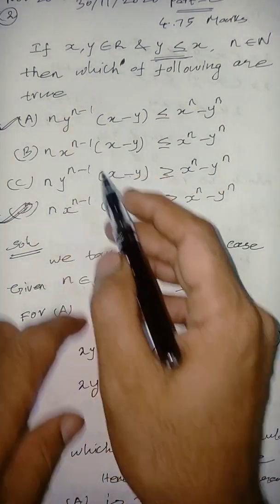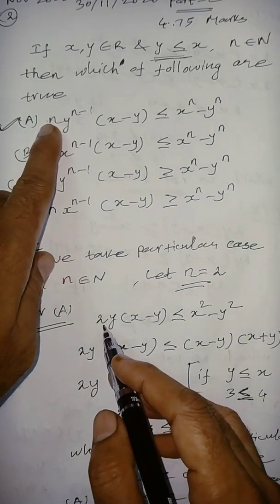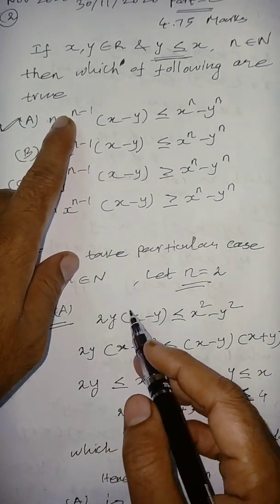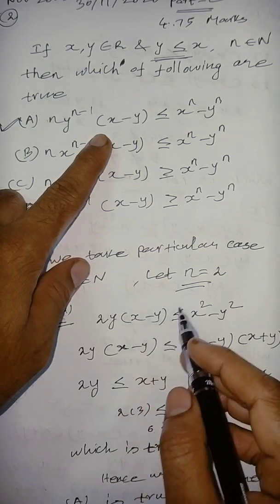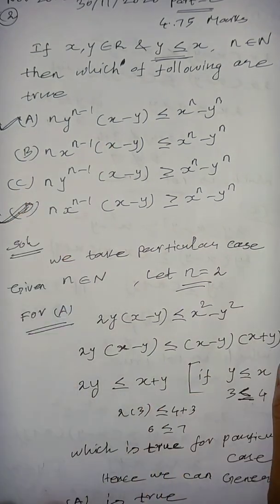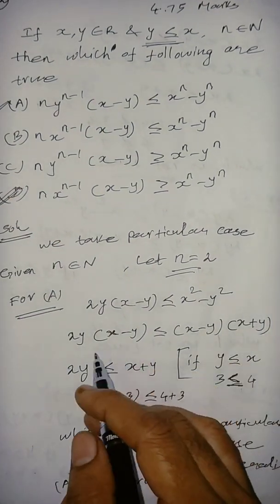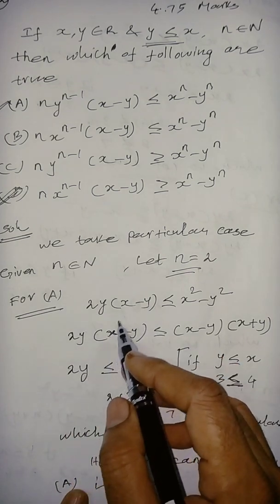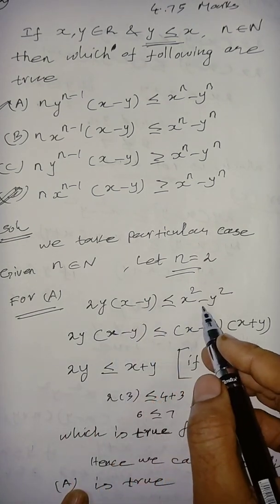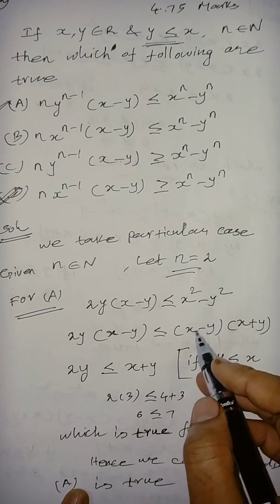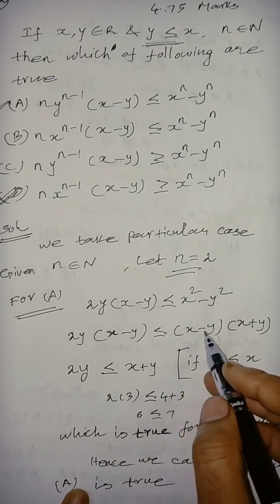So, I take n equal to 2. So, I substitute here, 2, y, 2 minus 1, that is nothing but 1, x minus y, which is less than or equal to x square minus y square. So, 2y into x minus y, which is less than or equal to, this is a well-known formula, this one, in algebraic formula, x minus y, x plus y.